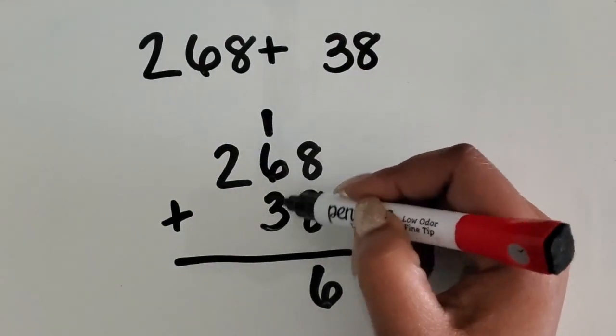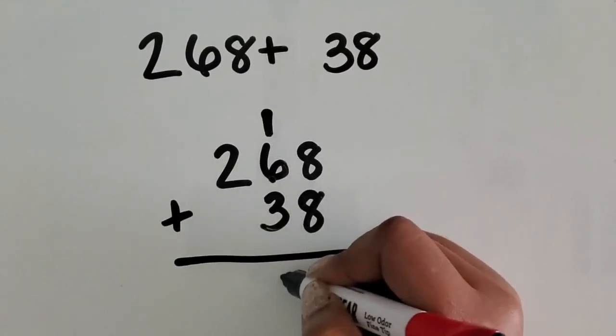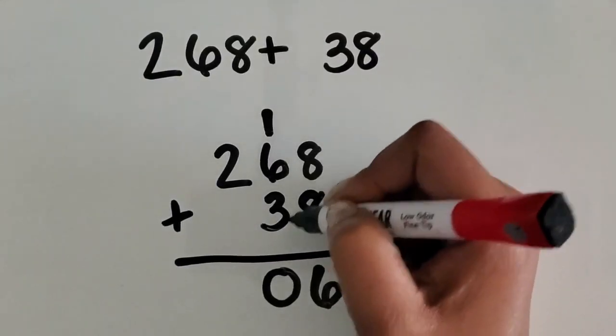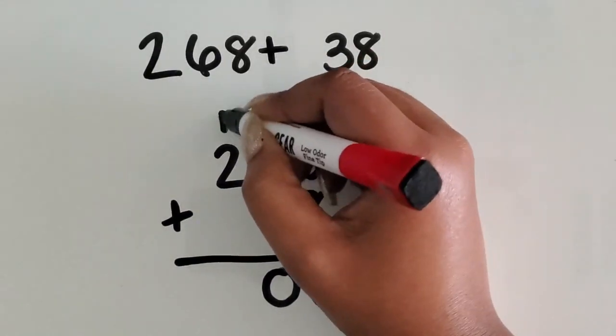Six tens plus three tens is nine tens, plus one more ten makes ten tens, or one hundred. So I'm going to regroup the ten tens for a hundred, so now we have zero tens, and we have an extra hundred.